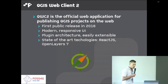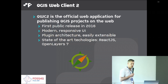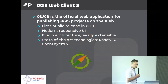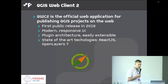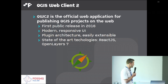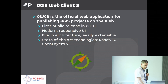QWC2 is the official web client of QGIS. It was first published in 2016 with the goal of providing a modern responsive user interface, a plugin architecture which is easily extensible, and using modern technologies like React and OpenLayers 7.